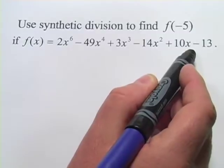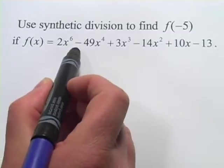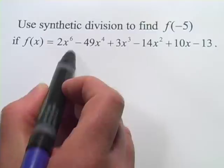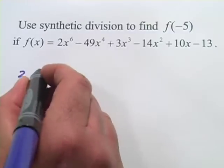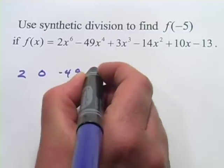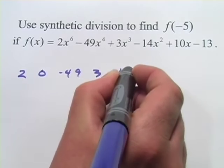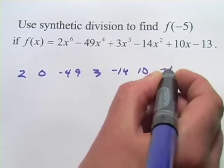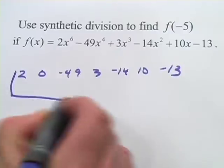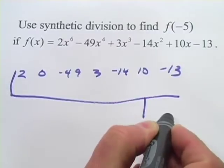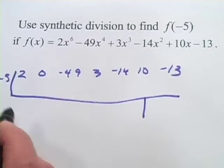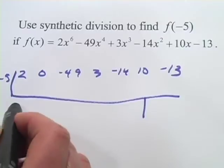So we're going to try that right now. We're going to write all our terms in order. You'll notice we're missing an x to the 5th term, so we're going to put in a 0 there. So 2, 0, negative 49, 3, negative 14, 10, and negative 13. Pretty long one here. There's our spot for our remainder, and we're going to divide by negative 5. So let's start by pulling down the 2.